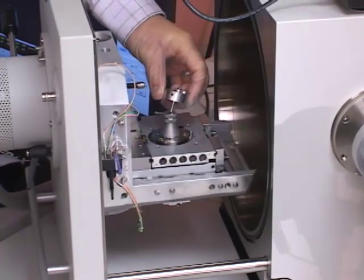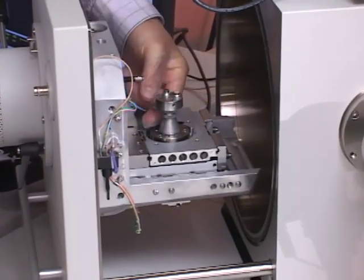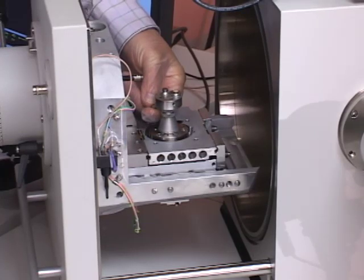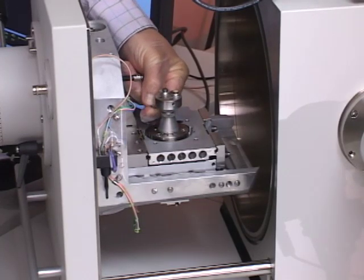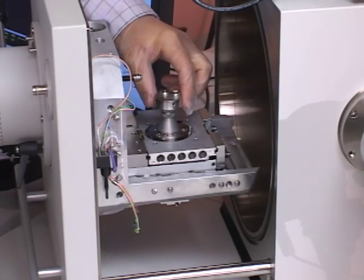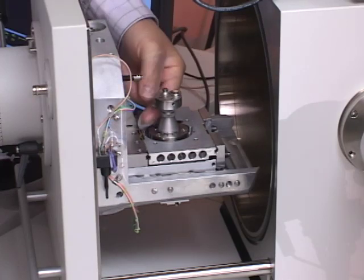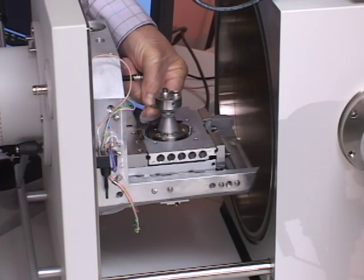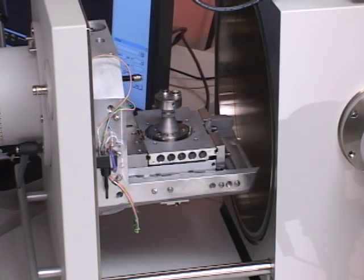I'm going to put the pin into the hole in the stage, and then there's a set screw on the side of this that I can tighten just with my fingers. And that keeps the holder stationary so that there's no vibration, and it also acts to ground the sample.